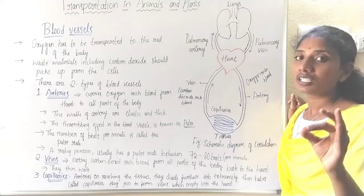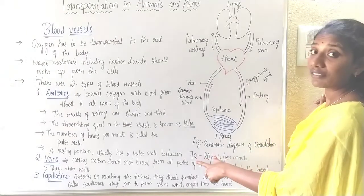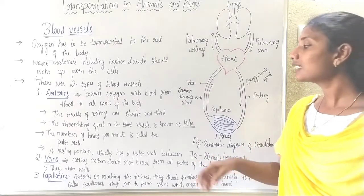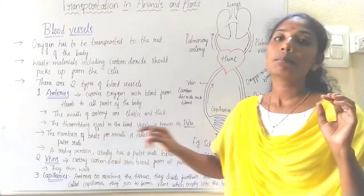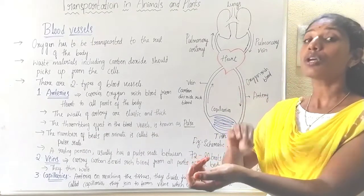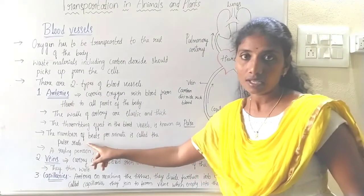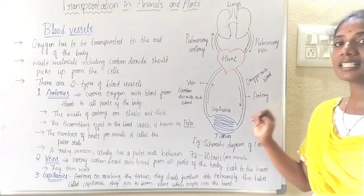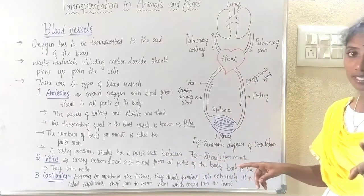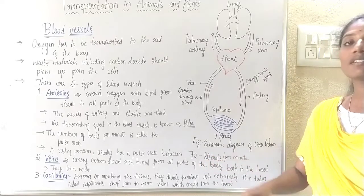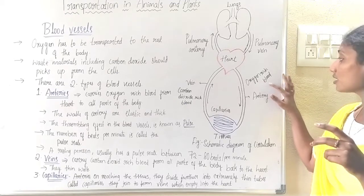When we are in a resting position, the pulse rate will be about 72 to 80 times per minute. The number of beats per minute is called the pulse rate. In a resting person, the pulse rate ranges between 72 to 80 beats per minute. When we do any physical activity, the pulse rate will increase. We understood that an artery is a blood vessel which carries oxygen-rich blood.